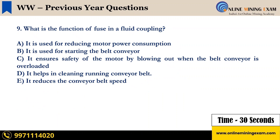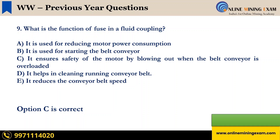Question 9: What is the function of a fuse in a fluid coupling? A — used for reducing motor power consumption, B — used for starting the belt conveyor, C — ensures safety of the motor by blowing out when the belt conveyor is overloaded, D — helps in cleaning the running conveyor belt, E — reduces the conveyor belt speed. The correct answer is C — it ensures safety of the motor by blowing out when the belt conveyor is overloaded.